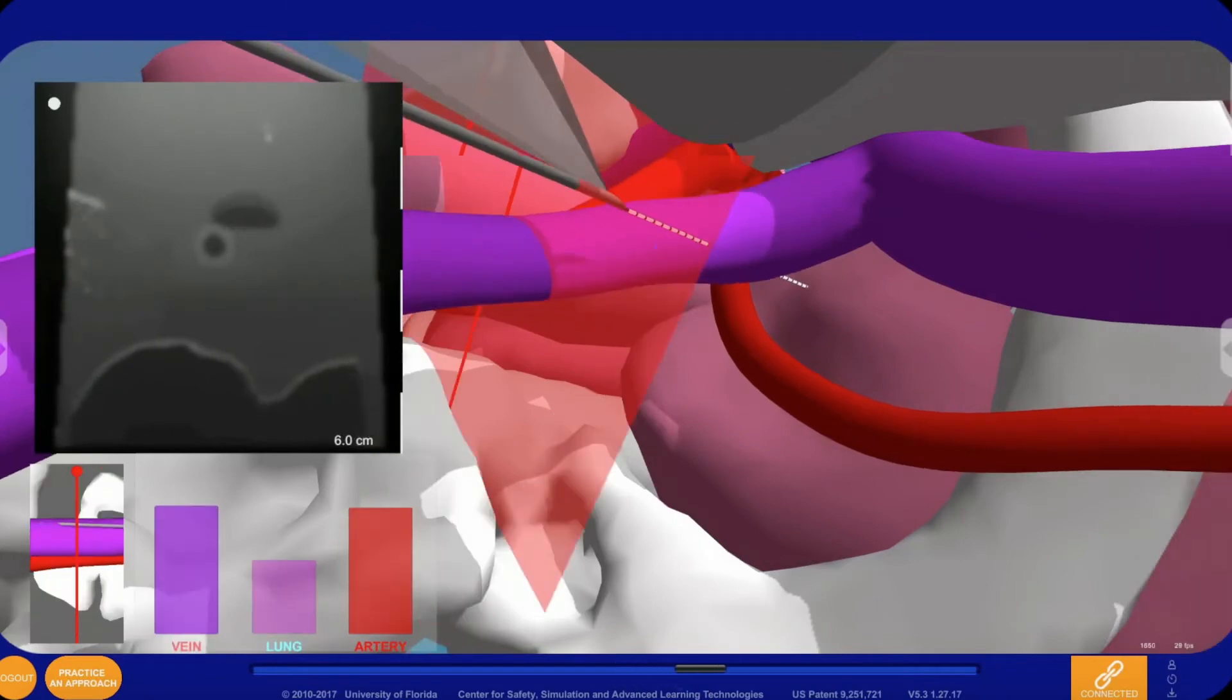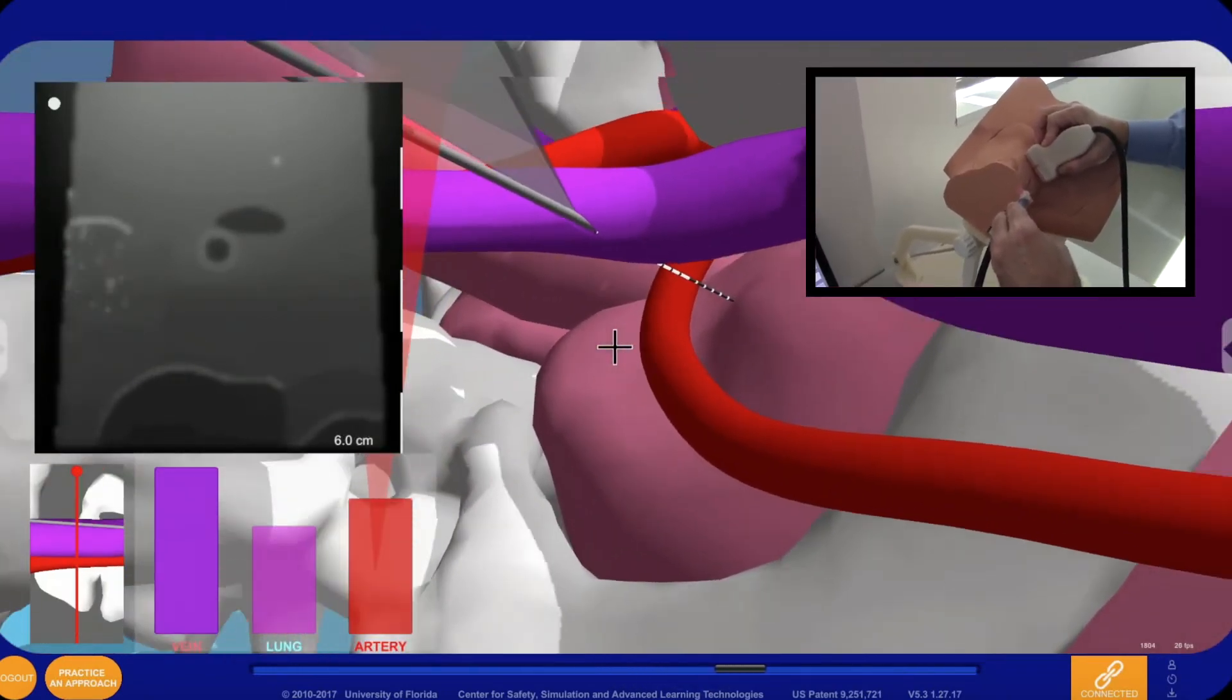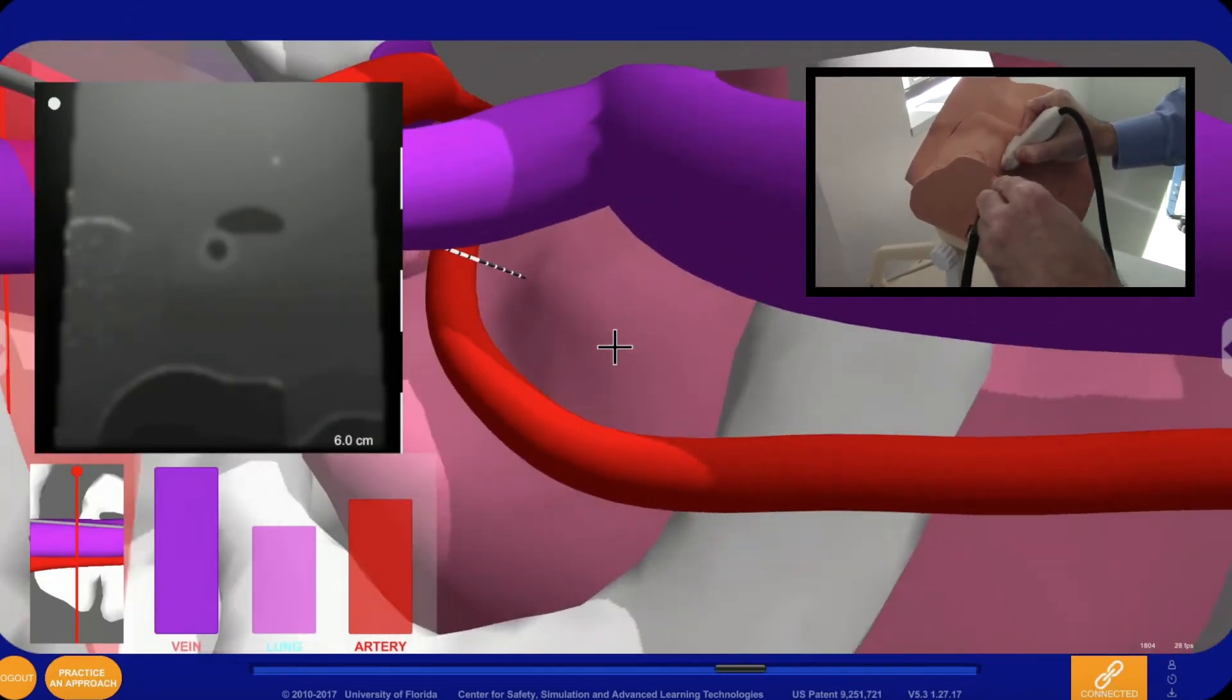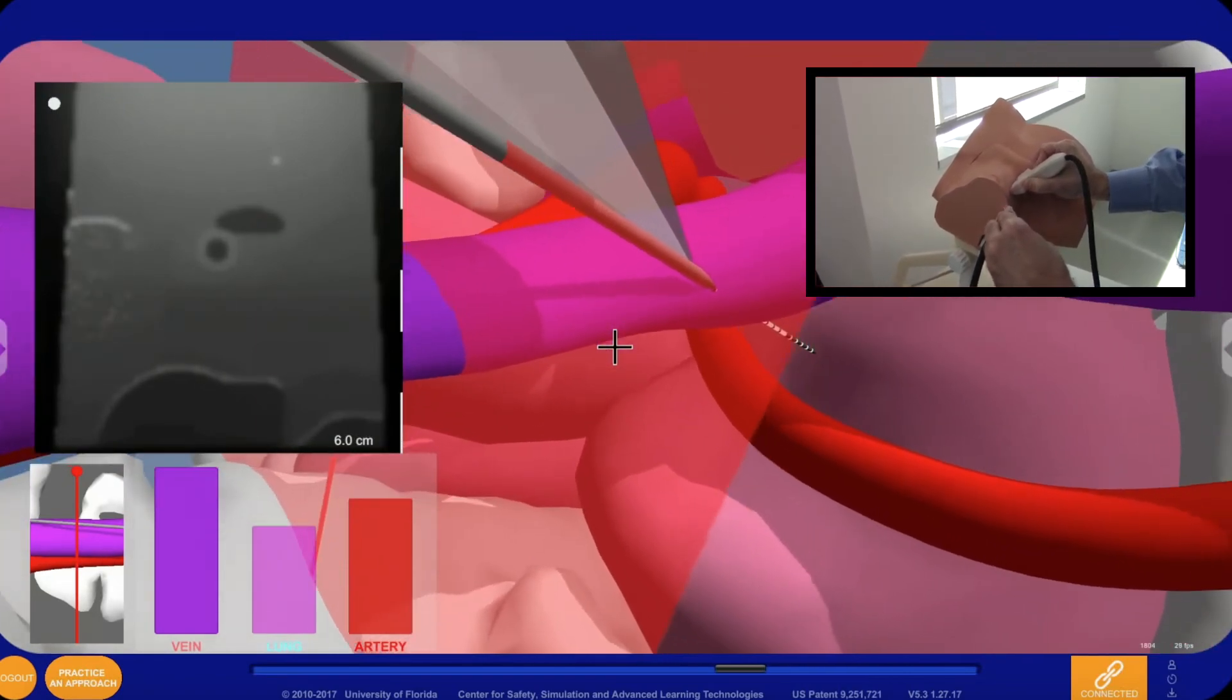The simulator includes custom cognitive aids that help instructors and learners use the simulator. One is a view of the needle and anatomy from the ultrasound probe's perspective. This view is aligned with the probe's axis and looks out along the insonating plane shown as a red line.